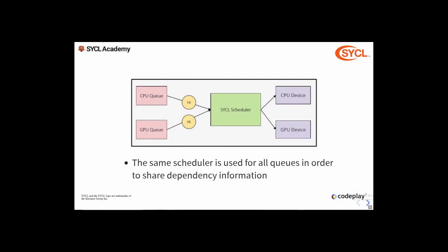The same scheduler is used for all queues in order to share dependency information and maintain a single ordering of commands. So when we have two command groups submitted to different queues, each queue processes its respective command group and submits it to the scheduler. The scheduler then decides the ordering of the commands based on their dependencies and enqueues the commands to the target devices in that order.